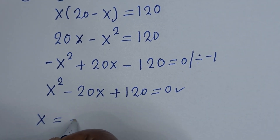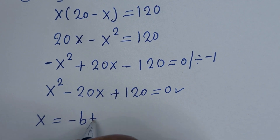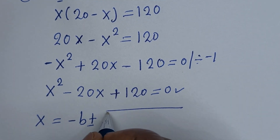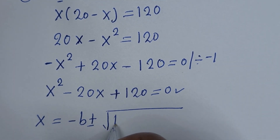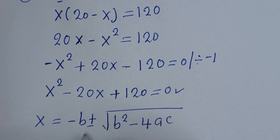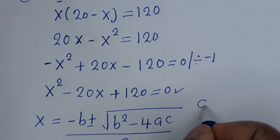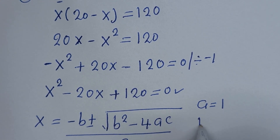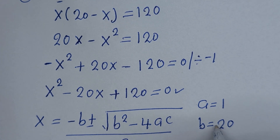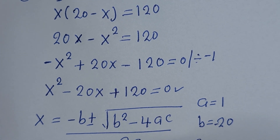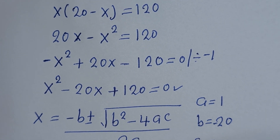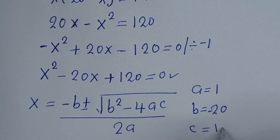The quadratic formula is: x equals minus b plus or minus the square root of b squared minus 4ac, over 2a. From this equation, a is equal to 1, b is equal to minus 20, and c is equal to 120.